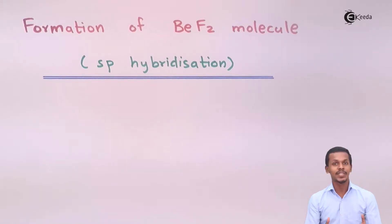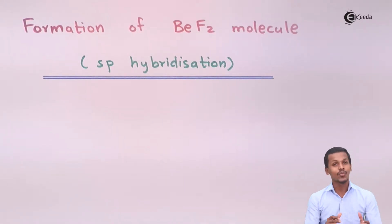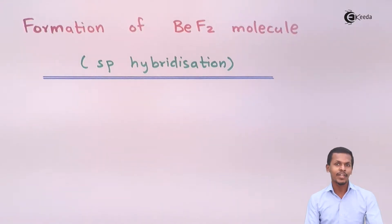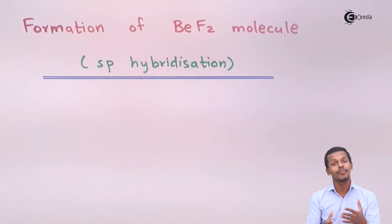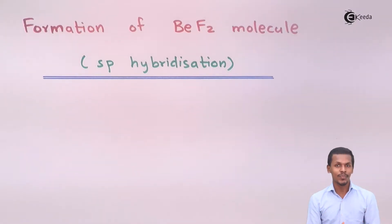In this case, beryllium is the atom that will be present at the center of the molecule, and that is what we have to concern ourselves with regarding the electronic configuration. Let us understand how to write the electronic configuration of beryllium and how it plays a very important role in giving the hybridization so as to form the BEF2 molecule.